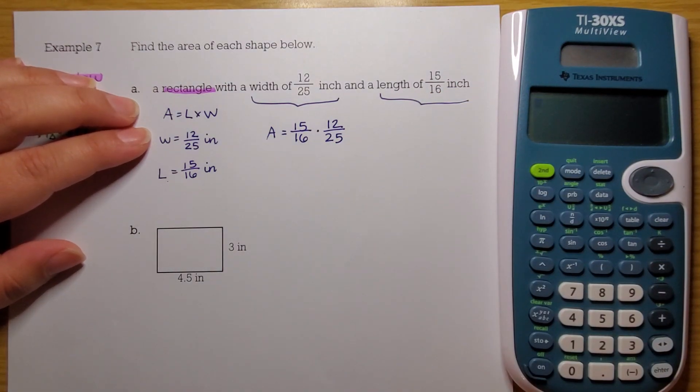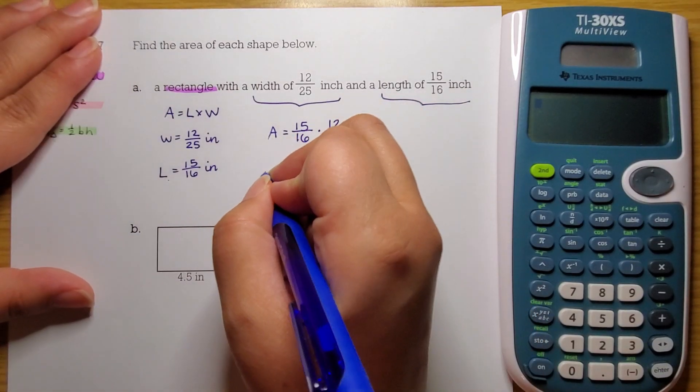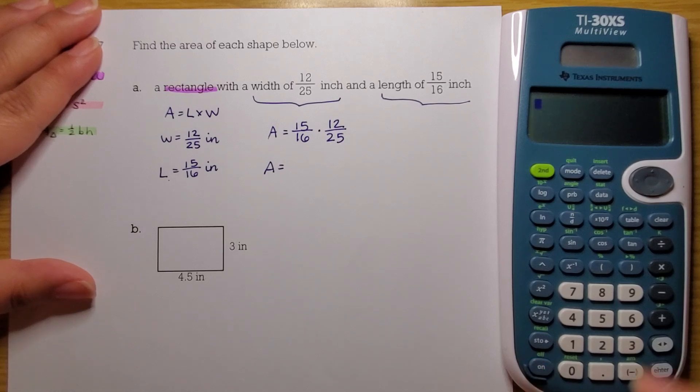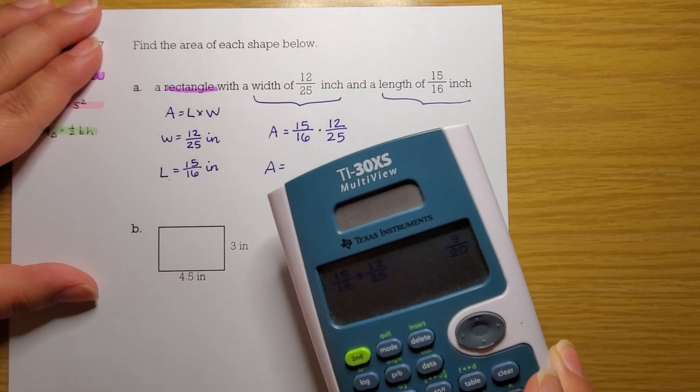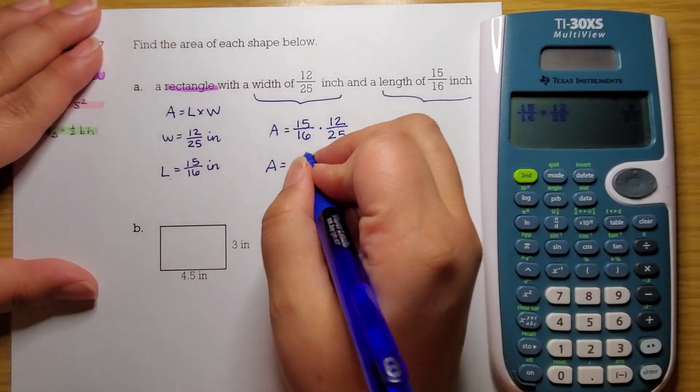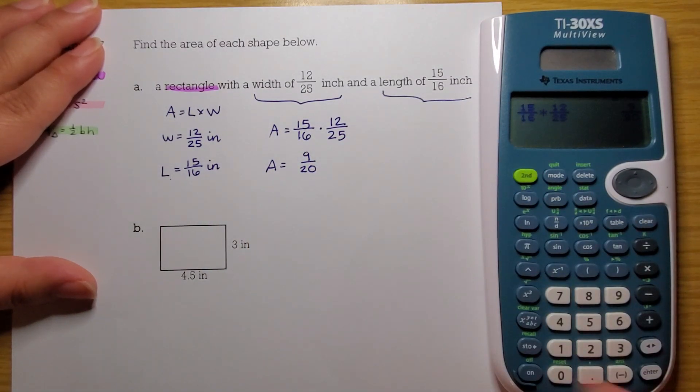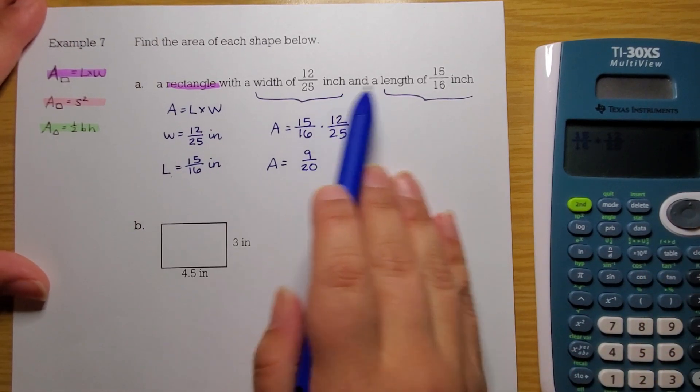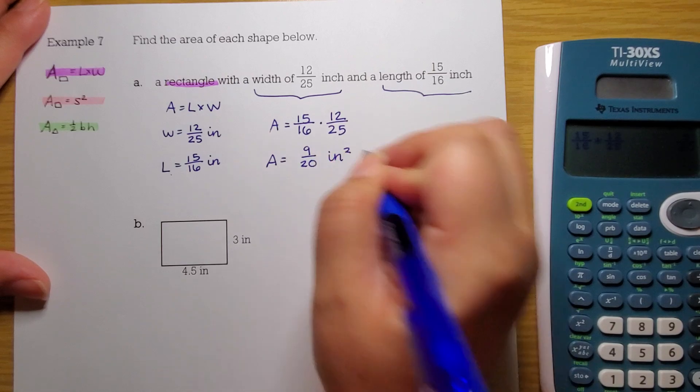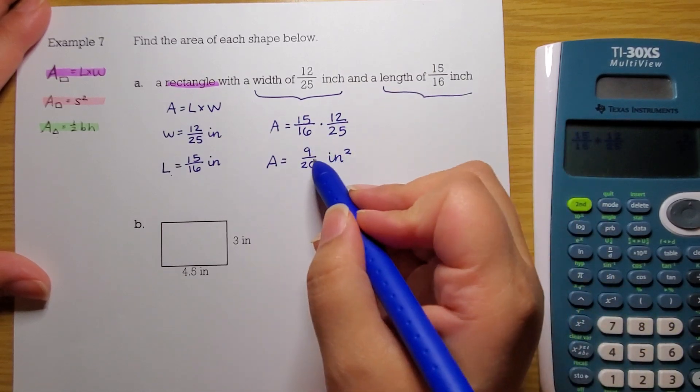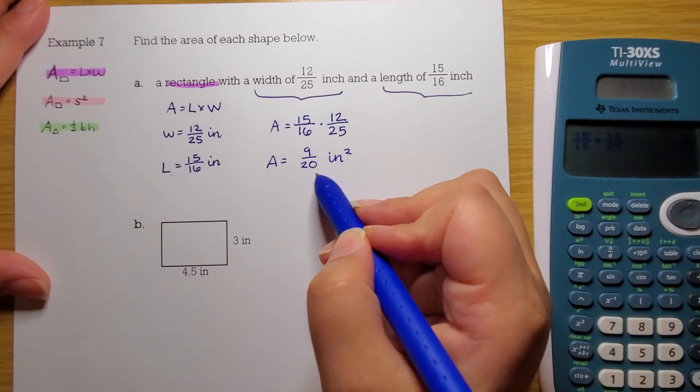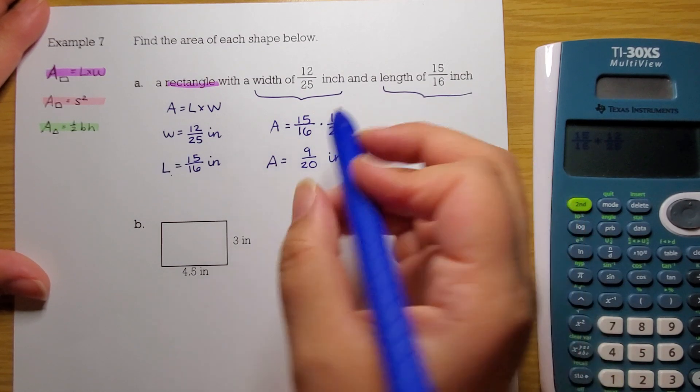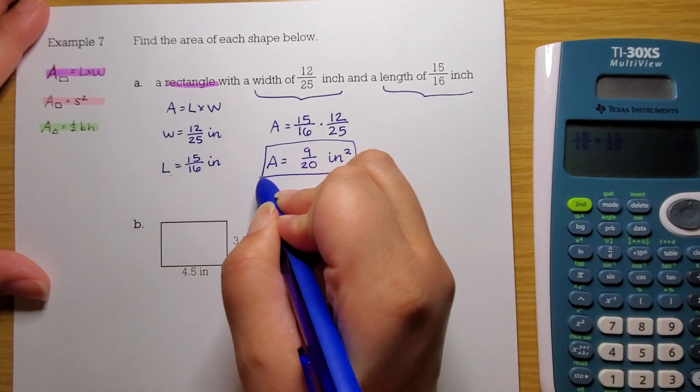I could go ahead and multiply using my techniques for multiplying fractions, or we can use our calculator, which is what I'm going to use in this case. So, I'm going to do 15/16 times 12/25. And I end up getting 9 over 20. Remember that units for area are square units. So, our sides were in inches. So, this is going to be inches squared. Please be careful, I'm not going to square this answer. I've already done what I needed to do to get the area. What's being squared here are the units only. We have 9/20 square inches.